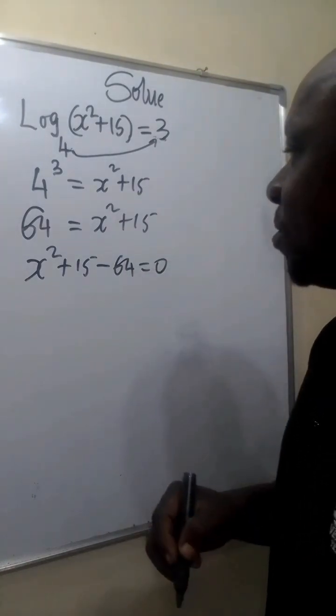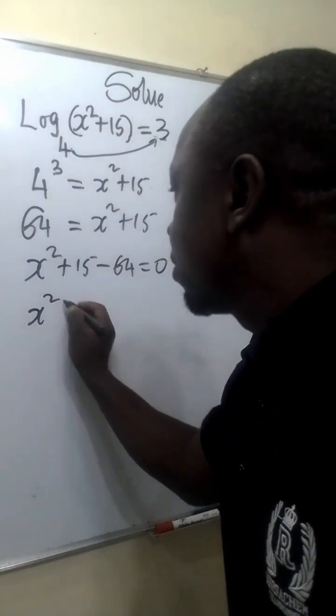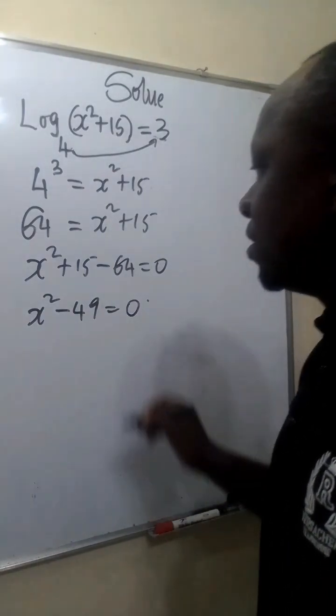15 minus 64 is 49. We are left with x squared minus 49 equals 0.